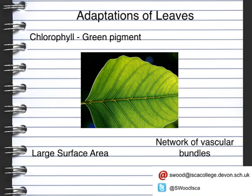The leaf is very thin, and this thin structure means that gases such as carbon dioxide and oxygen don't have far to travel to get to and from the actual cells. The final thing is the stomata. The stomata are on the bottom part of the leaf and they are the tiny pores that enable gas to go in and leave the leaf. This is known as gas exchange within the leaf.